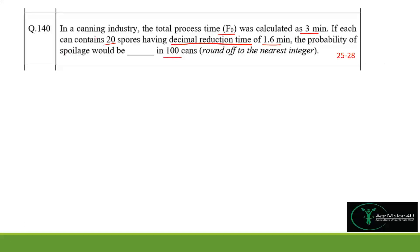The basic formula to find probability of spoilage is: 1/r = N₀ × (1/10^(F/D)), where r is the number of cans, N₀ is the initial spore load, F is the F-value, and D is the D-value.